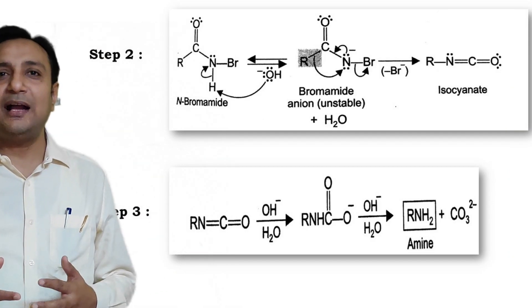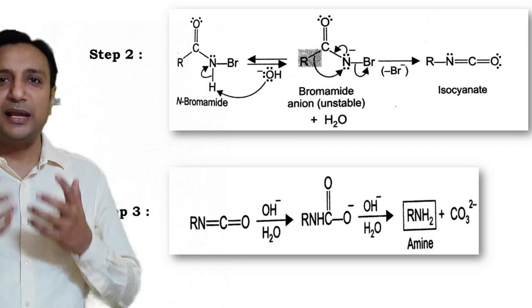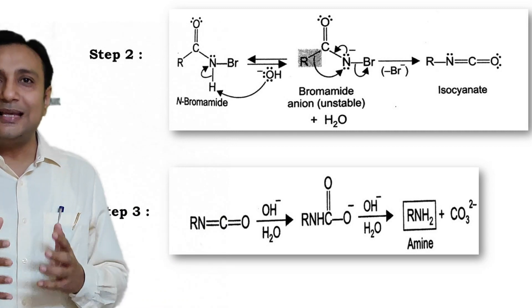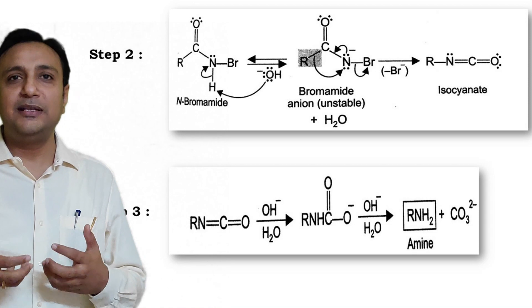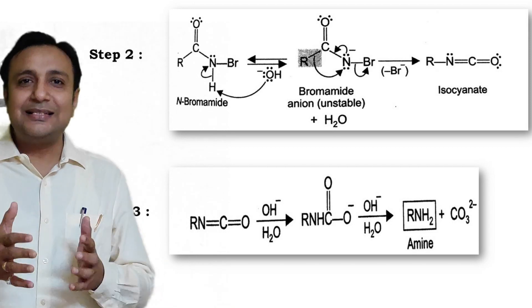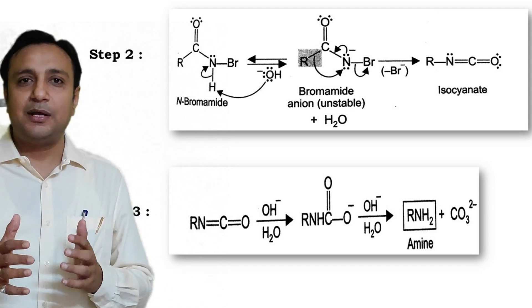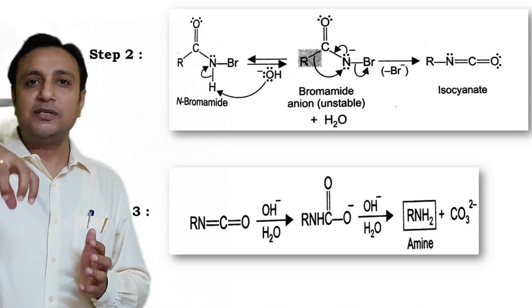In Step 2, the hydroxide ion abstracts a proton from N-bromamide to produce the corresponding anion. This anion undergoes migration of R and loss of bromine simultaneously to form an isocyanate. This is a very important step because the alkyl group migrates towards the nitrogen atom to form the isocyanate.